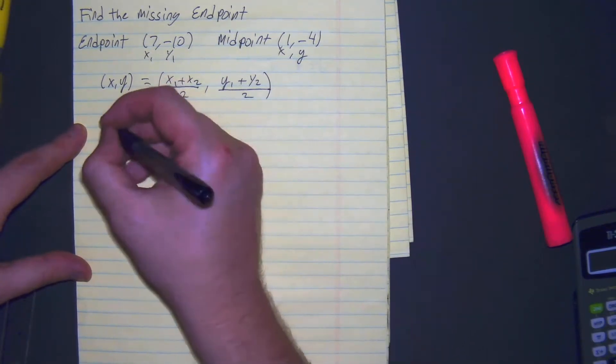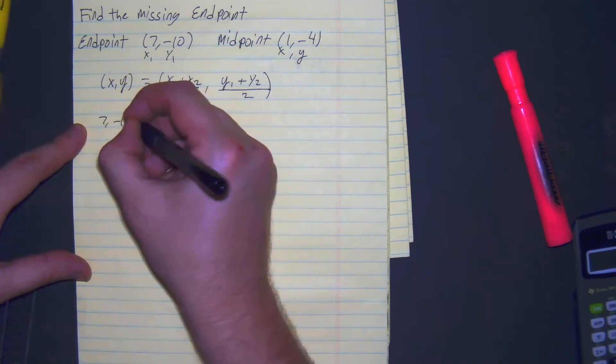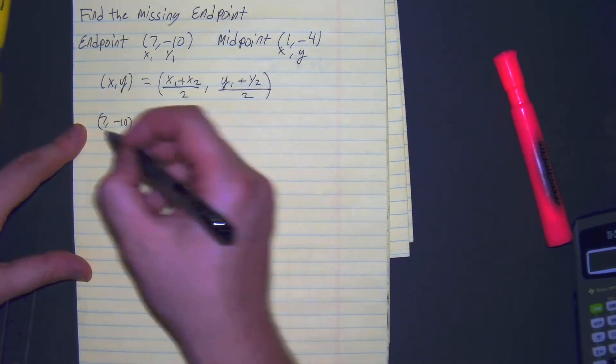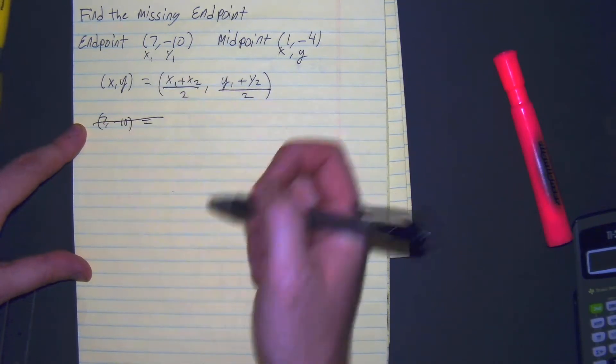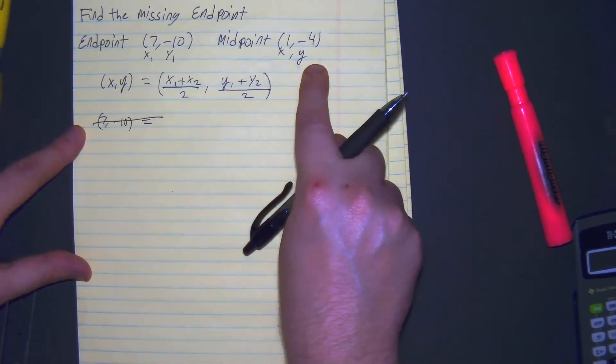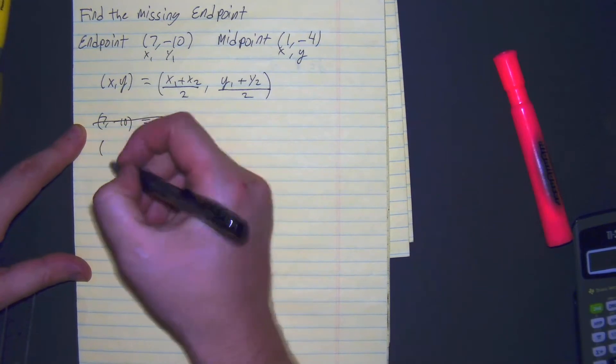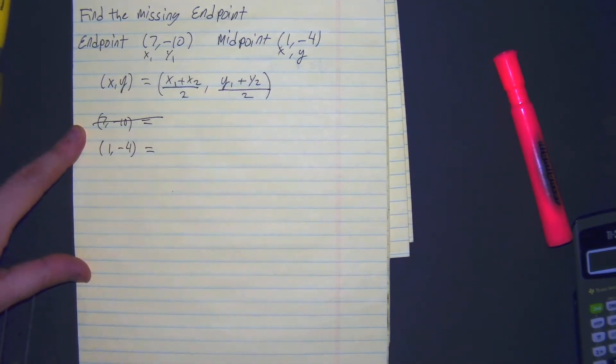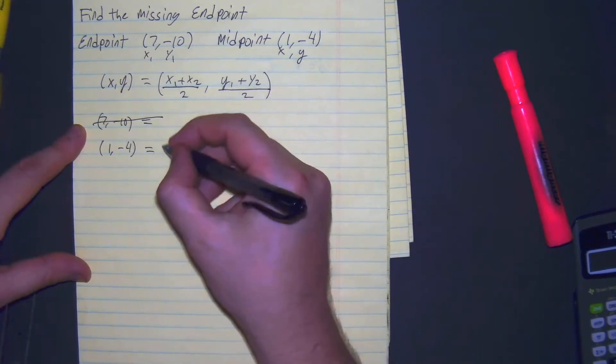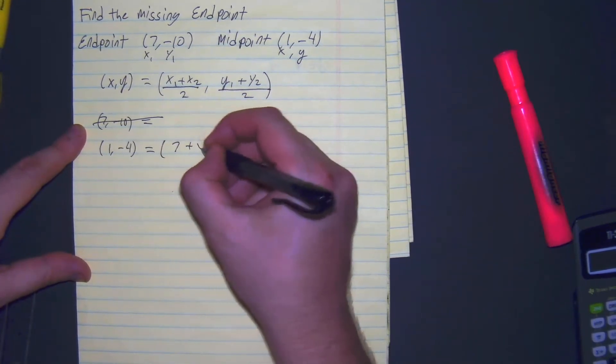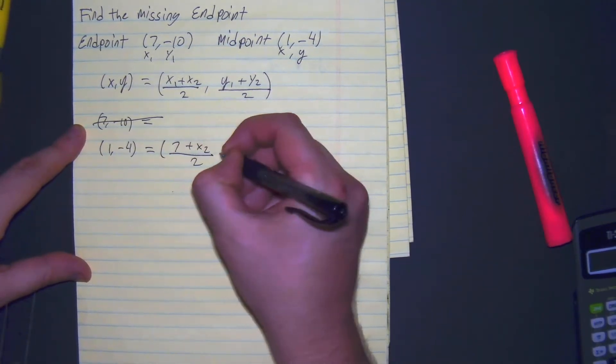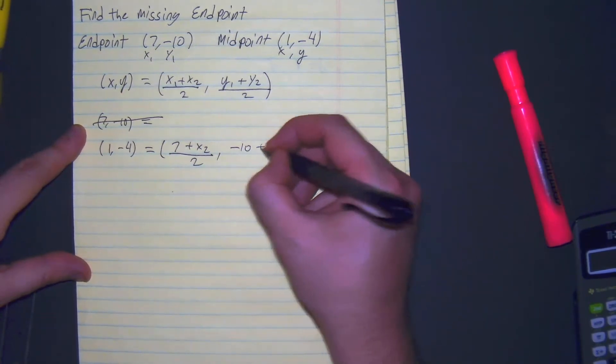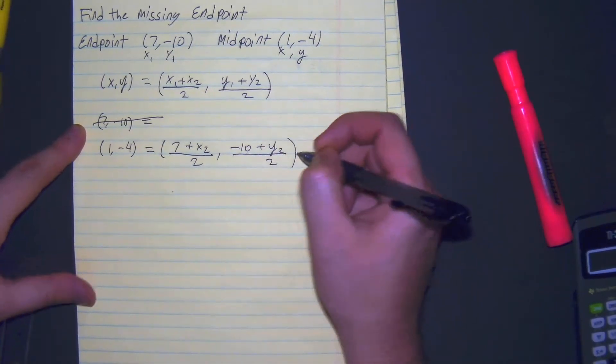So we have 7 comma negative 10 is equal to... oh, look at that. We can't do that. It's great that we organized, right? So we have 1 comma negative 4 is equal to 7 plus x2 divided by 2, comma negative 10 plus y2 divided by 2.